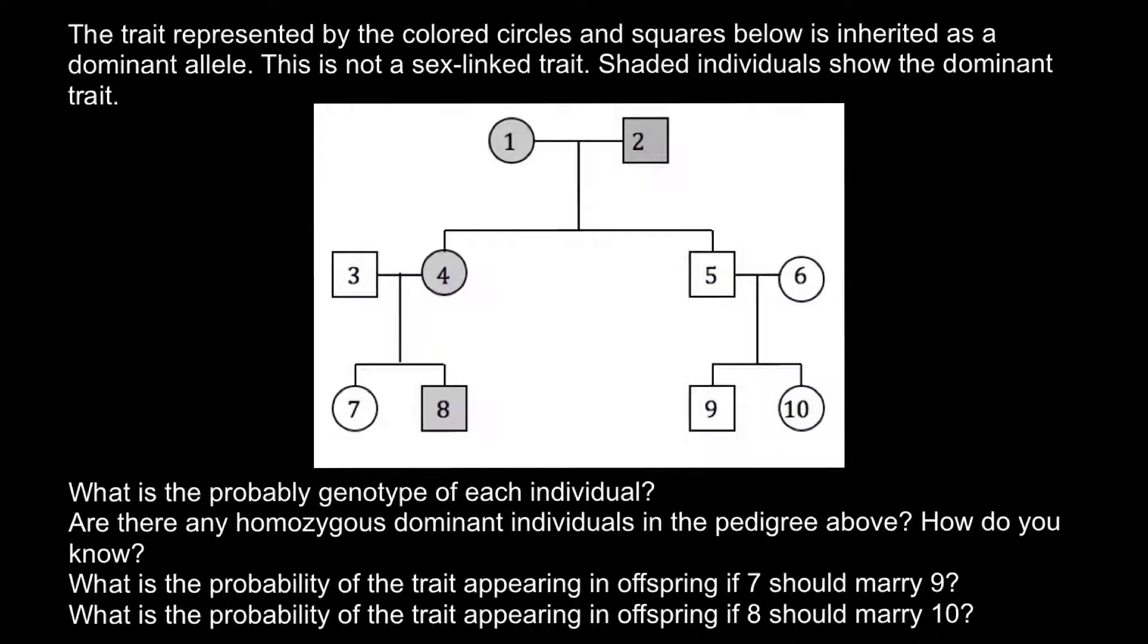And here is a list of the questions. The first question is what is the probable genotype of each individual? Second, are there any homozygous dominant individuals in the pedigree above? How do you know?